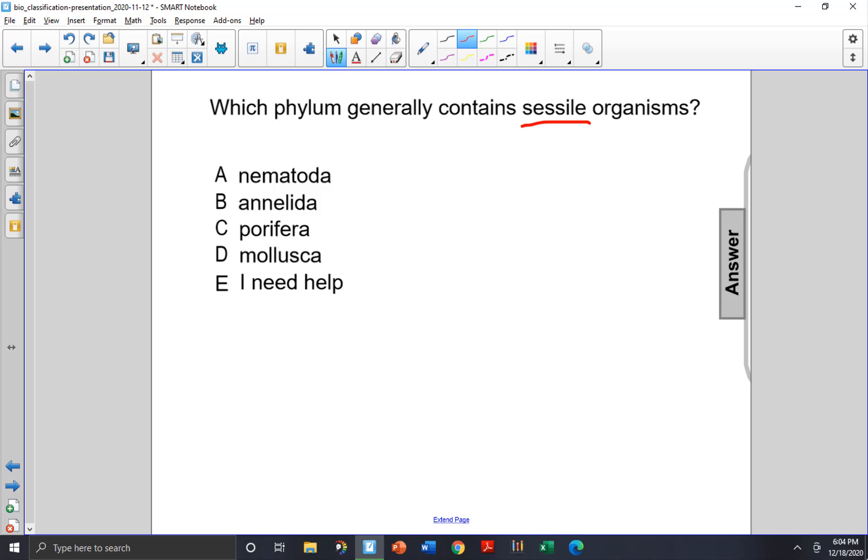Nematoda and Annelida are both worms that are able to move, so A and B are not correct.